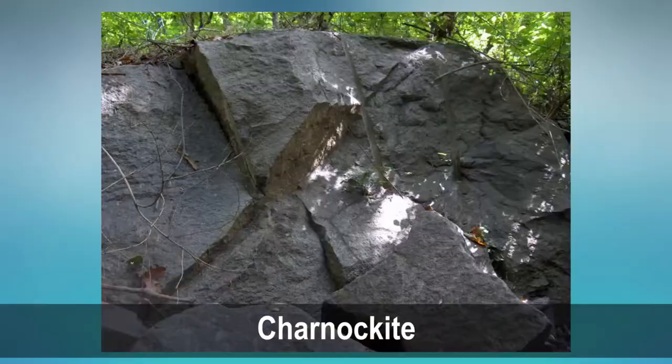Charnockite: a hypersthene-bearing granite. Greisen: a pneumatolitic or metasomatically altered granitic rock whose feldspar is replaced by mica and often rich in fluorine-bearing minerals like topaz. Note: if a metamorphosed igneous rock still possesses its original fabric, the prefix meta- is used — for example, metabasalt or metadiorite. Moving on to metamorphic textures.